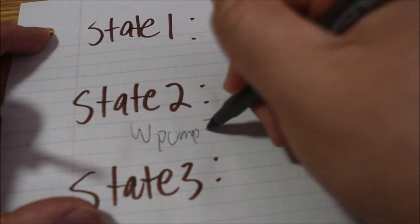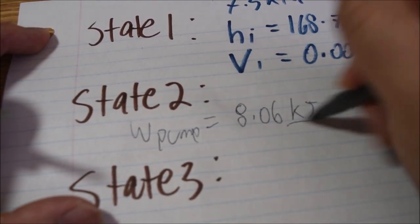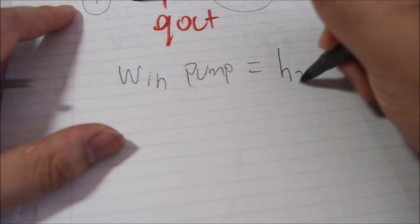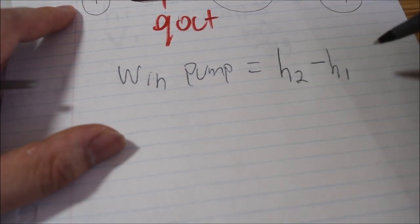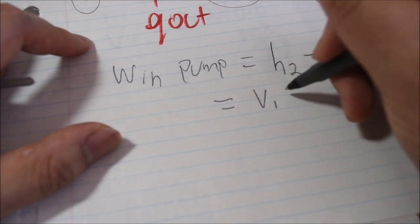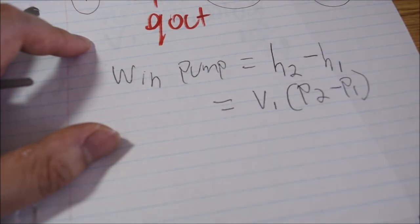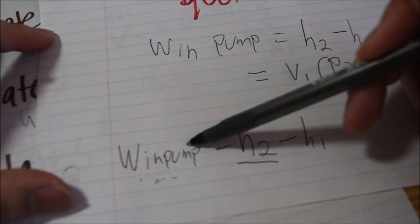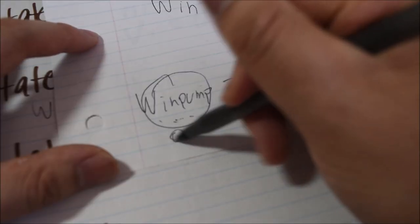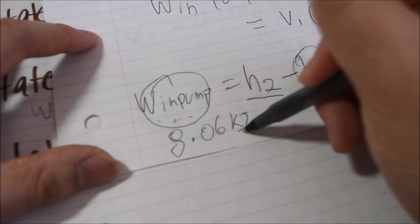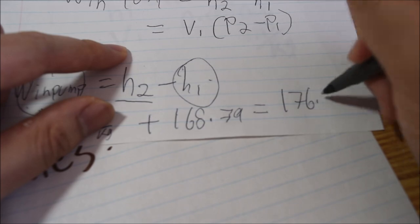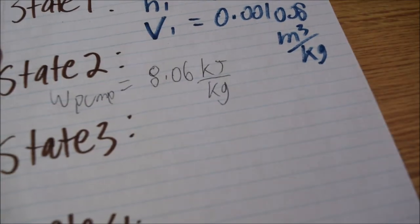Given the work of the pump is 8.06 kilojoules per kilogram, and the formula tells us that the enthalpy at state 2 minus the enthalpy at state 1 equals the specific volume at state 1, which equals the work pump in. We can solve the enthalpy at state 2, because we are given the pump work and h1, which gives us h2 equals the work pump in plus the enthalpy at state 1.